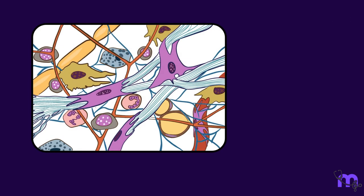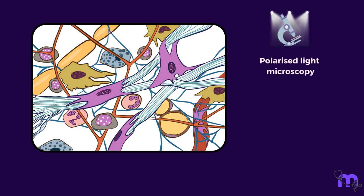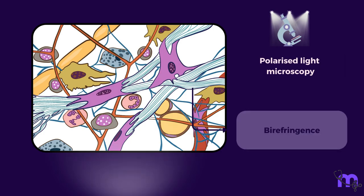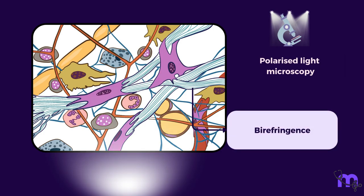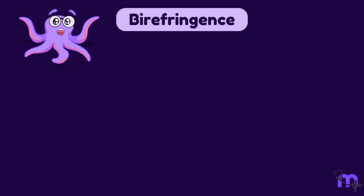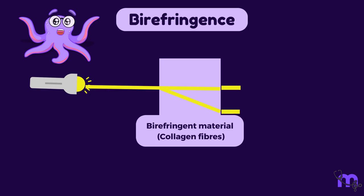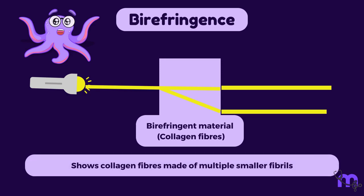Collagen fibers can also be seen using special techniques such as polarized light microscopy, which highlights the characteristic birefringence of collagen fibers. When polarized light shines on the collagen fibers, the light splits into two beams that are refracted in different directions. This phenomenon is called birefringence, and indicates that collagen fibers are made up of multiple smaller fibrils.